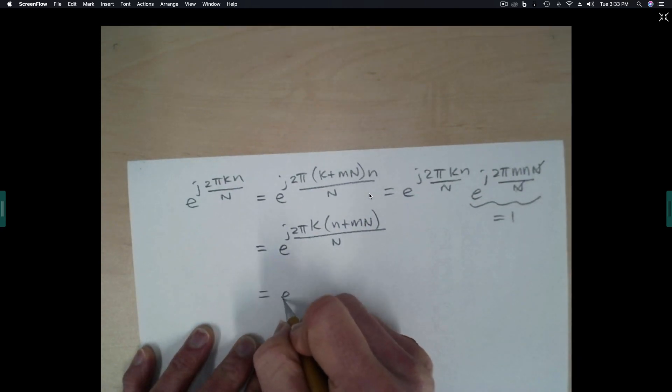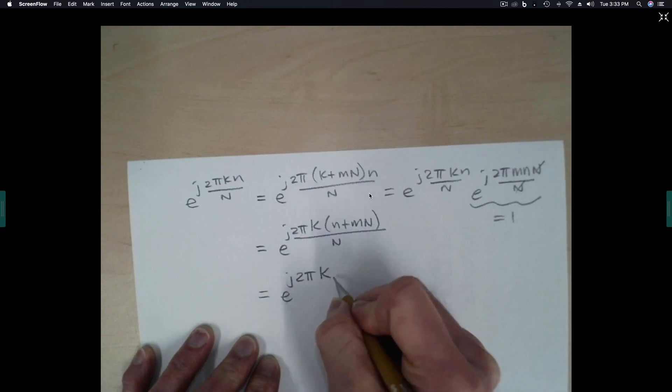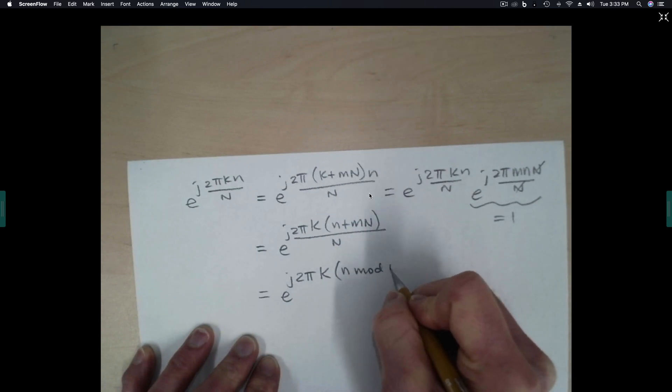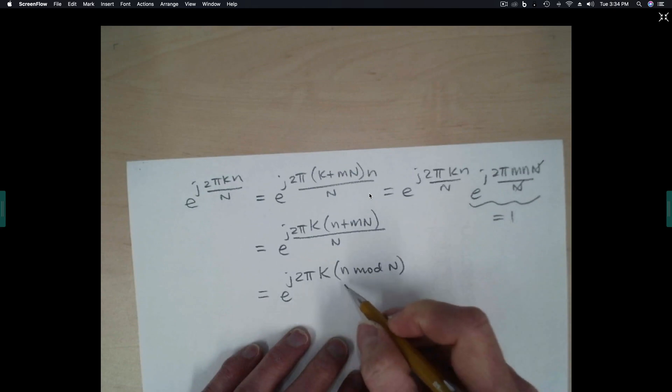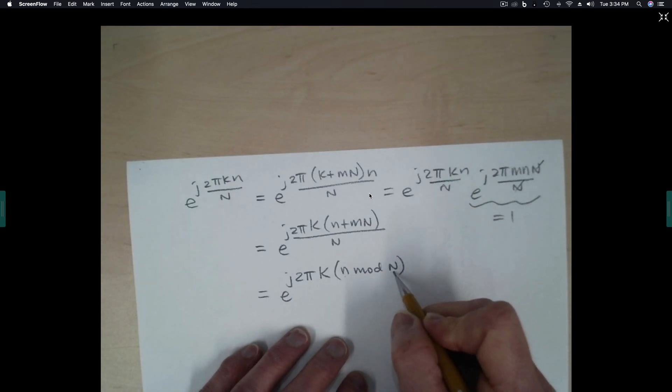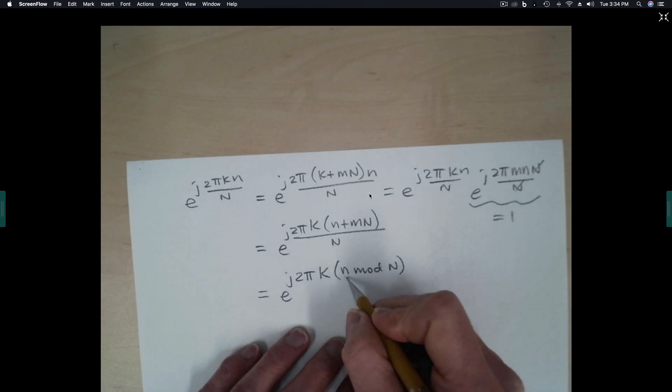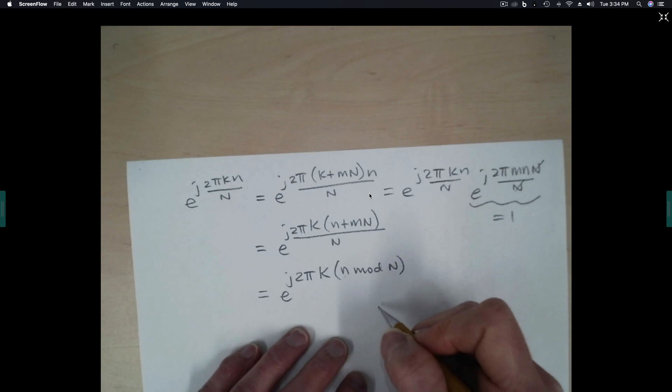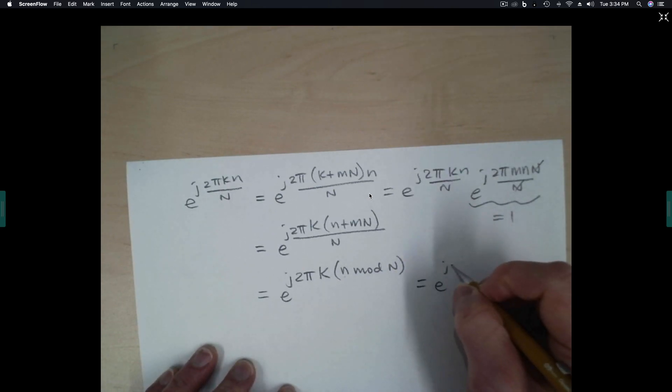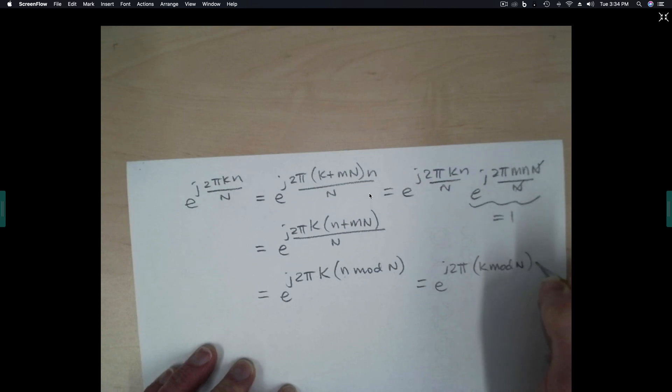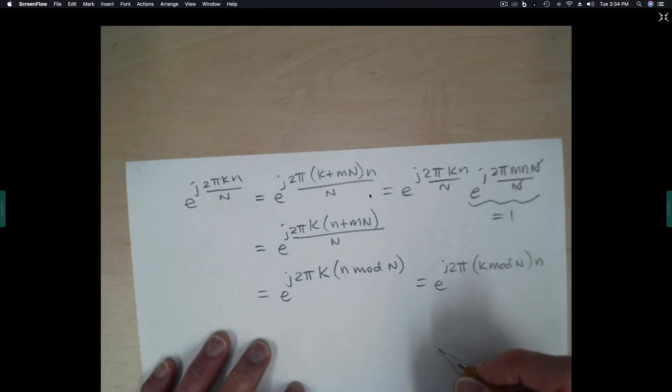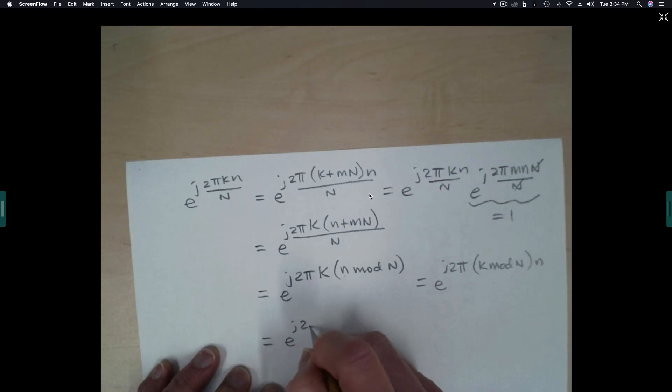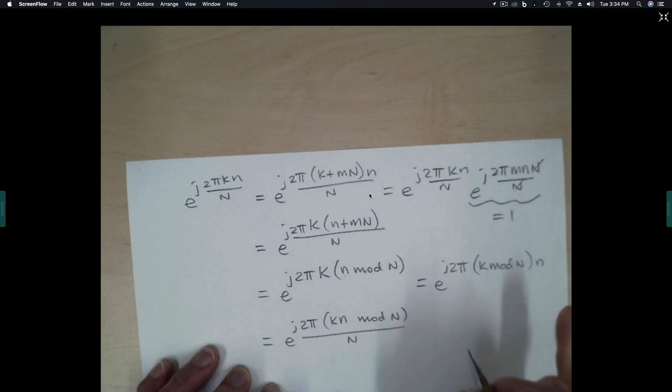The other thing that we could do is we could say this is equal to e to the j 2 pi k n modulo capital N. What is a modulo operation? The modulo operation takes n, whatever the value is, and adds or subtracts multiples of capital N, until the sum falls into the range 0 to capital N minus 1. Similarly, this is equal to e to the j 2 pi k mod n times little n. And the list goes on and on. It's also equal to e to the j 2 pi k times n modulo capital N. And there's other versions of this that we could write down.